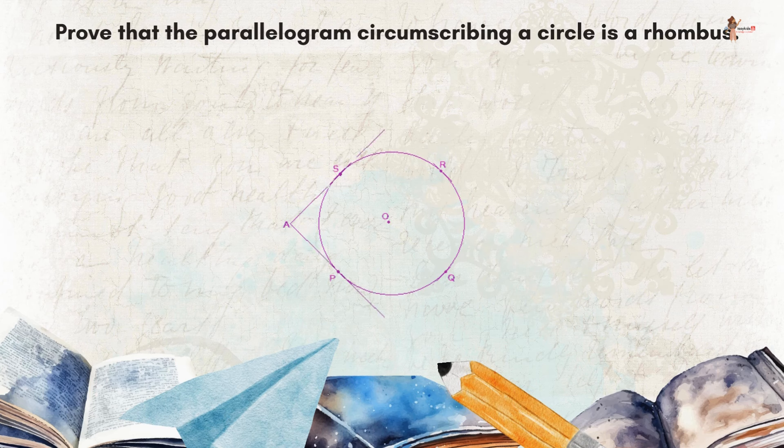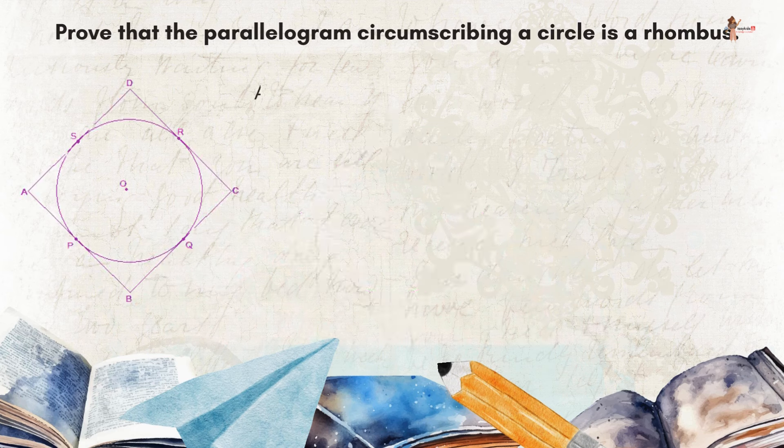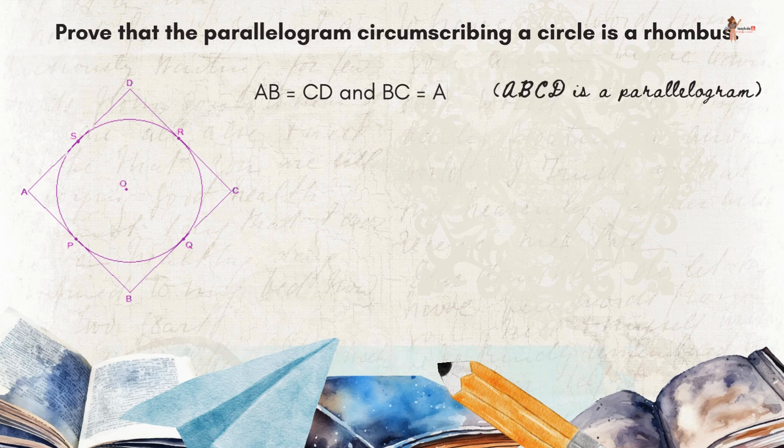Now consider a parallelogram ABCD which is circumscribing a circle with center O. Since ABCD is a parallelogram, AB is equal to CD and BC is equal to AD because opposite sides of a parallelogram are equal.